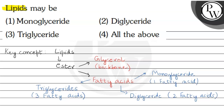So we can see that there are three types of lipids: monoglyceride, diglyceride, and triglyceride. The question was asking that lipids may be monoglyceride, diglyceride, or triglyceride. Since all three options are correct, our answer will be option 4, that is, all of the above.